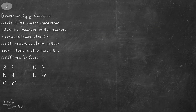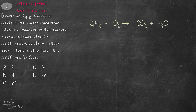This is also a balancing equation question, but it involves types of reaction because we need to know the products of combustion. When butane C4H10 combusts in excess O2, the products are CO2 and H2O. We list out all the atoms and count them on both sides. To balance carbon we place a 4 in front of CO2.